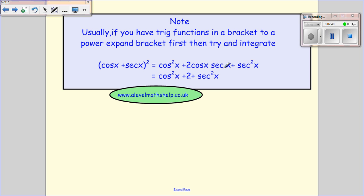And don't forget, sec is 1 over cos, so that cos and that cos would cancel, just giving us 2. So this is nice, and you know that you can integrate this, this, and this. So this suddenly becomes much easier.